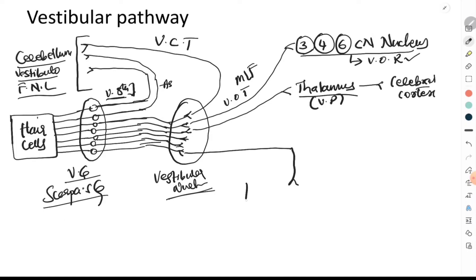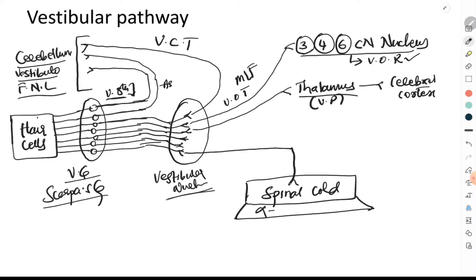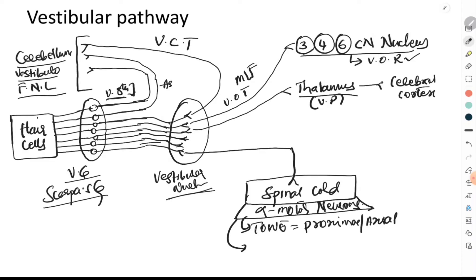Some fibers from the vestibular nucleus terminate at the level of the spinal cord, specifically at the level of the alpha motor neurons. These alpha motor neurons help in maintenance of the tone of the proximal muscles as well as the axial muscles. This very important pathway — called the vestibulospinal tract — is crucial for maintenance of posture.